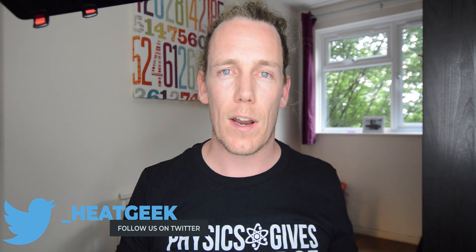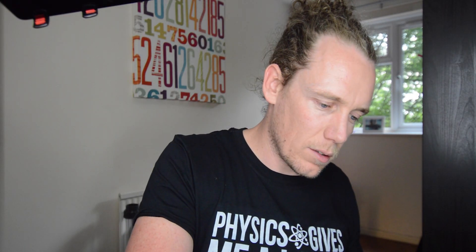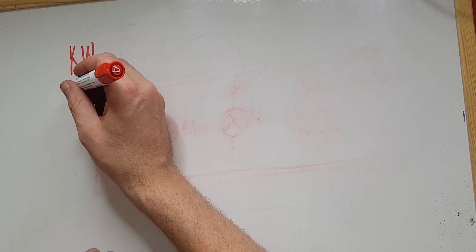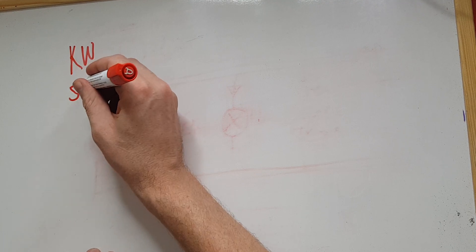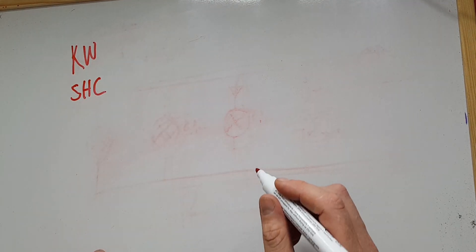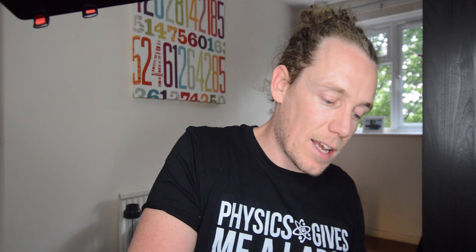Hi guys, very quick video on mass flow rate here. So what is mass flow rate? Mass flow rate is the relationship between the energy in — generally in kilowatts — the capacity for the medium to carry heat, which is called specific heat capacity, and the flow rate. And what you get from those relationships is a delta T.